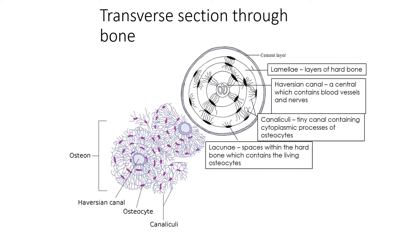Now we have the transverse section of the bone — this is as if we sawed the bone in half. On the outer part we can see the cement layer, then the layers of hard bone, all there to prevent the bone being easily broken. Then we have the Haversian Canal, a central canal containing blood vessels and nerves. Then there's a tiny canal containing cytoplasmic processes of osteocytes, and spaces within the hard bone that contain the living osteocytes.